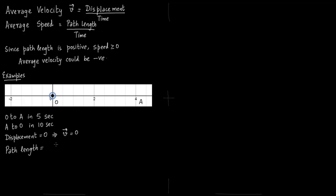It is O to A which is 4 and then A to O which is 4. 4 plus 4 is 8. So speed is 8 divided by total time, 5 plus 10 is 15. So speed is 8 by 15 meters per second whereas velocity is 0 meters per second.